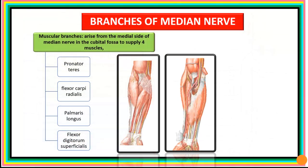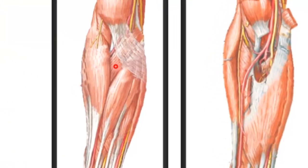The muscular branches arise from the medial side of the median nerve in the cubital fossa and supply four muscles: the pronator teres, the flexor carpi radialis, the palmaris longus, and the flexor digitorum superficialis. So it supplies these four muscles of the superficial group of the flexor compartment.